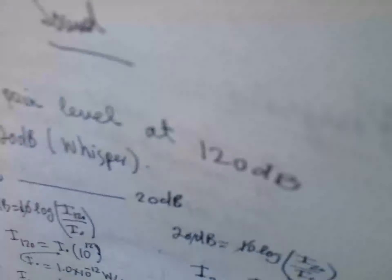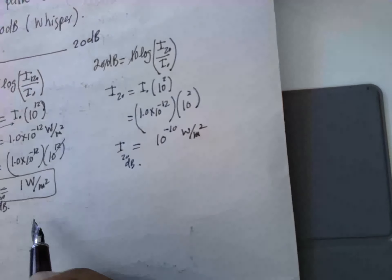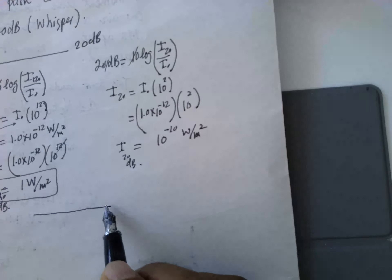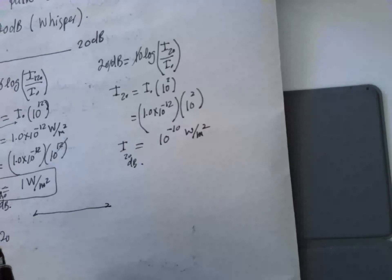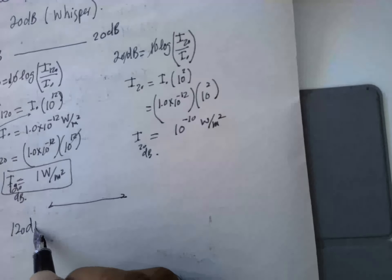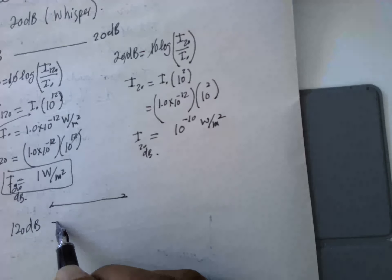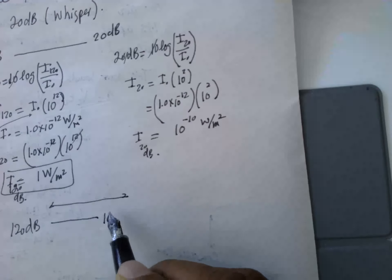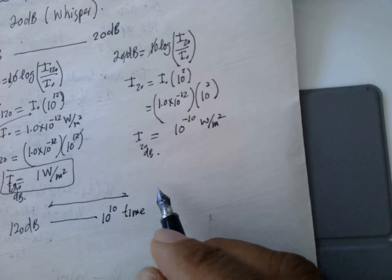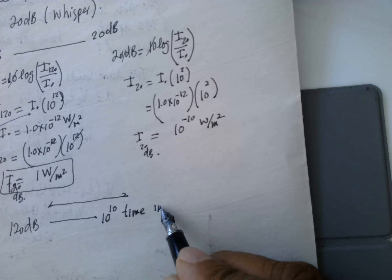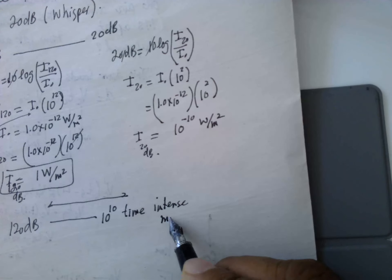So the difference is 120 dB is 10 to the power of 10 times more intense and more painful.